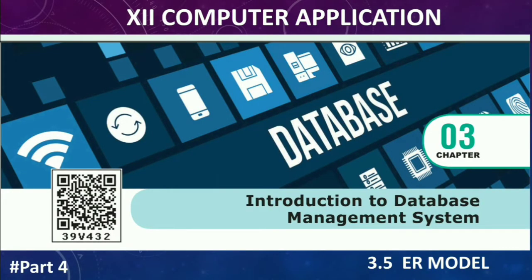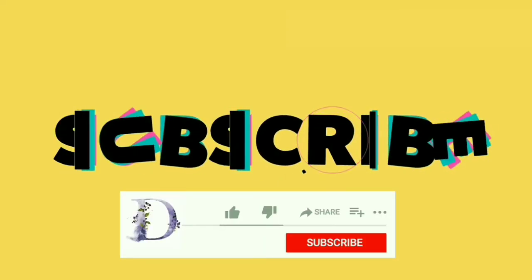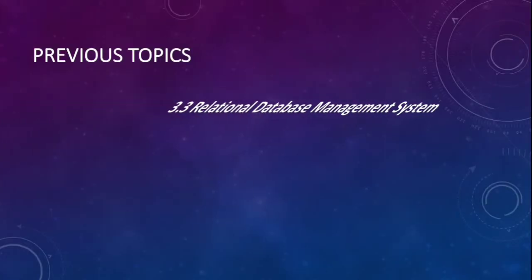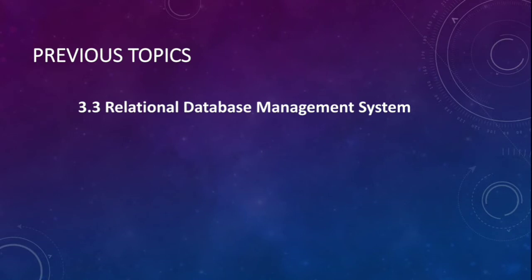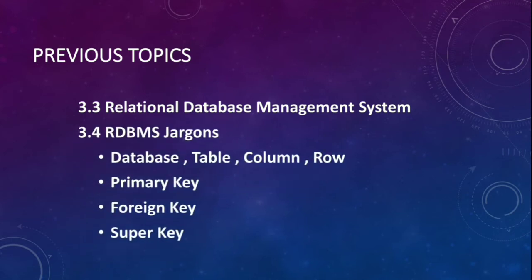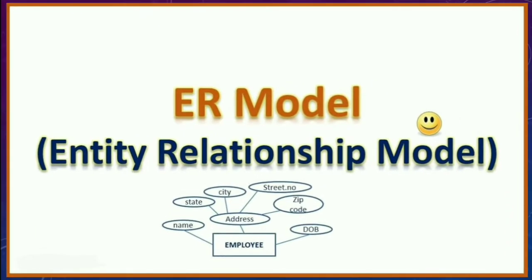Hi students, welcome back. This is Plus 2 Computer Application, Chapter 3, Part 4 video. Before getting into the video, please do subscribe. Let's quickly see the previous topics. We have learned about RDBMS, that is Relational Database Management System, and about RDBMS jargon — database, table, column, row, and different types of keys: primary key, foreign key, and super key.